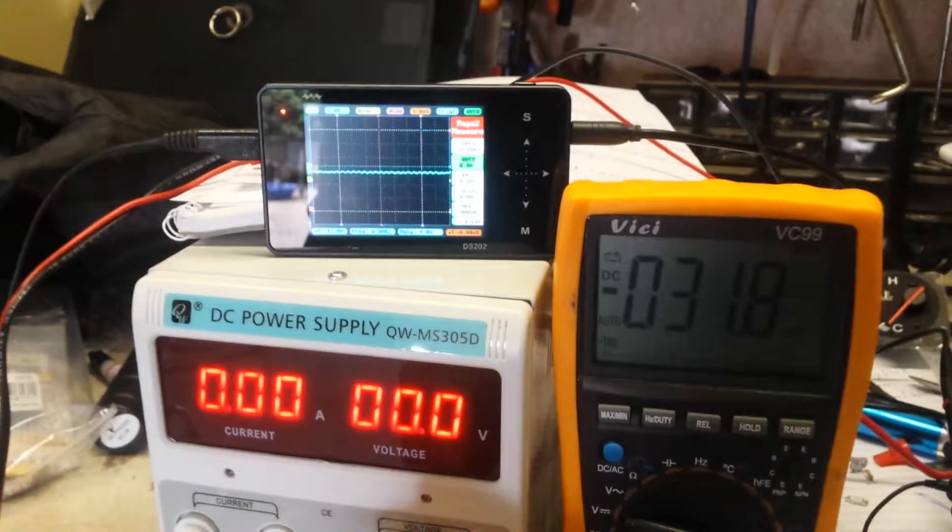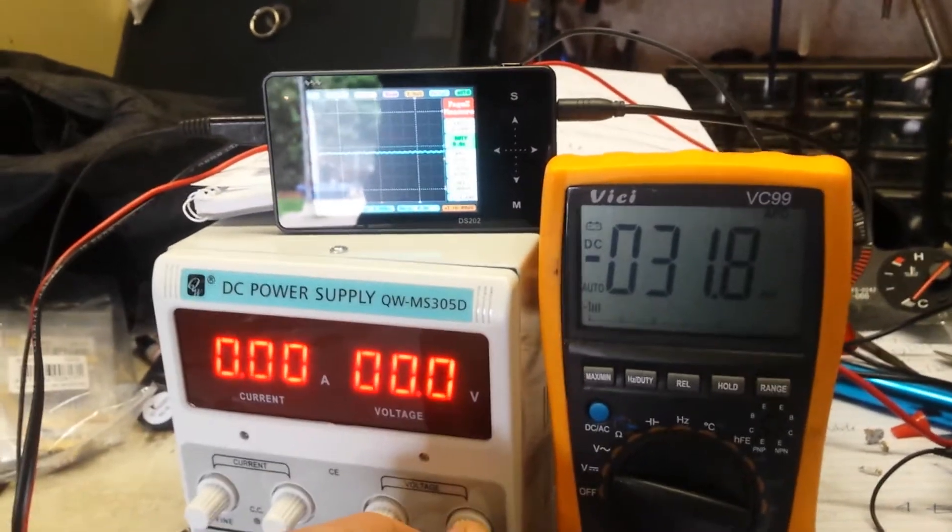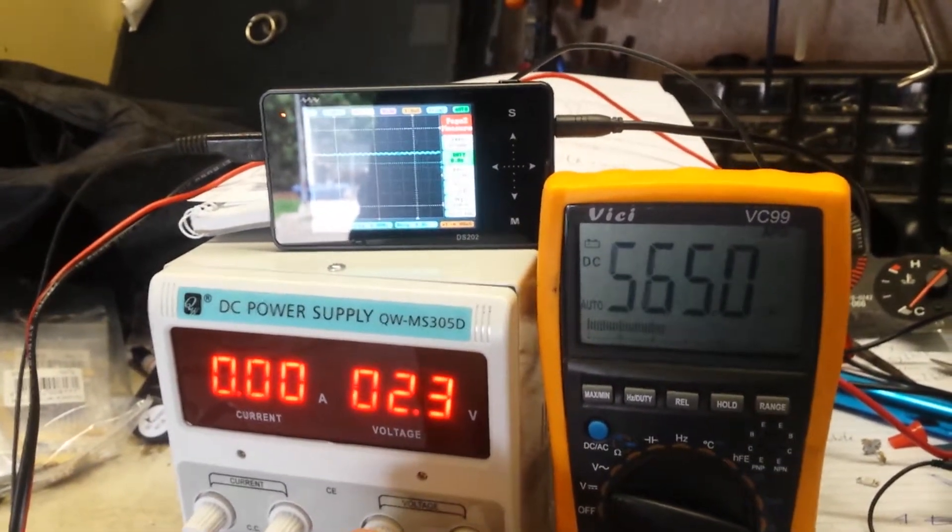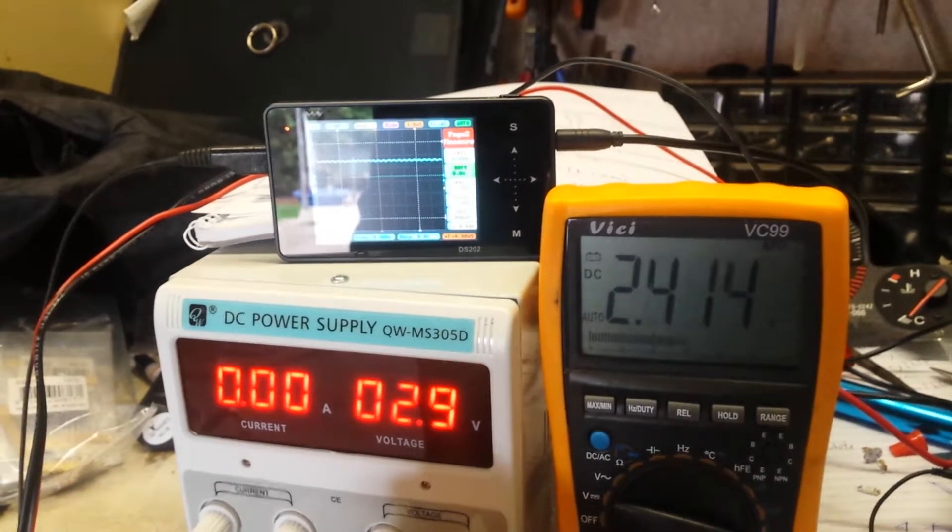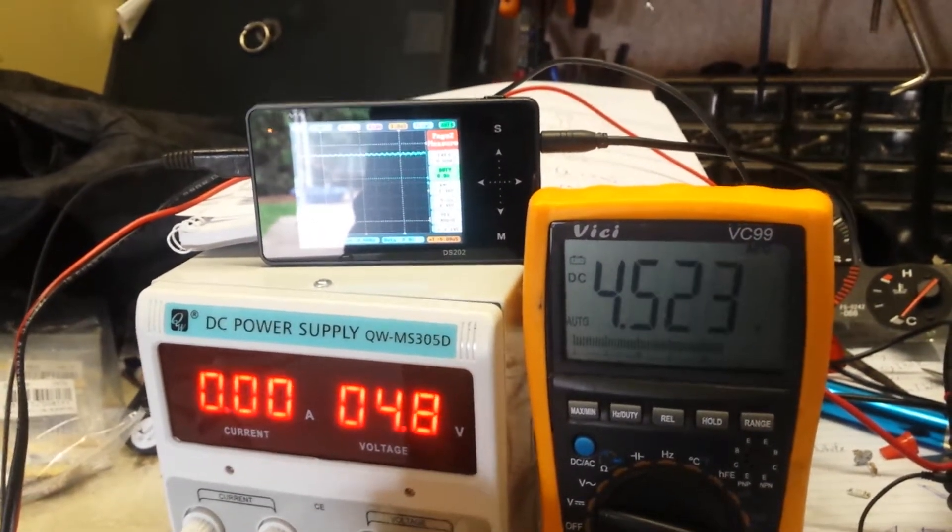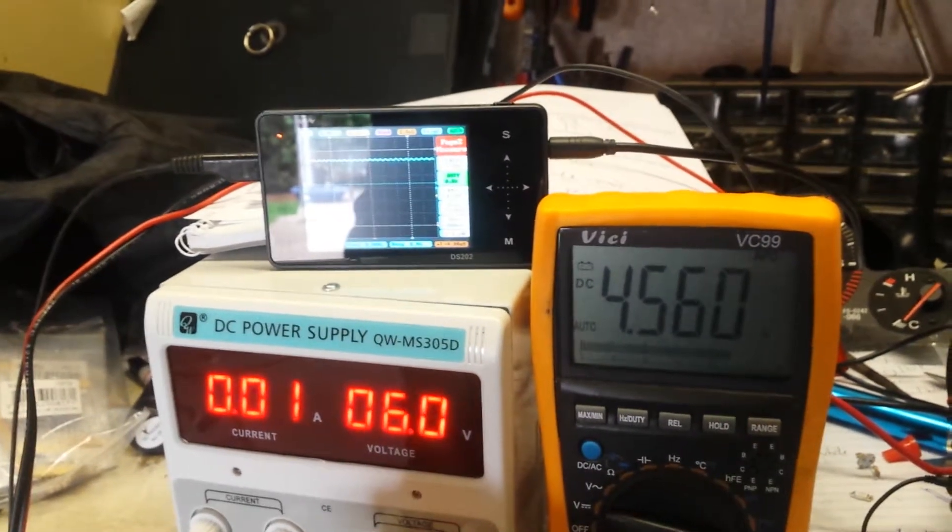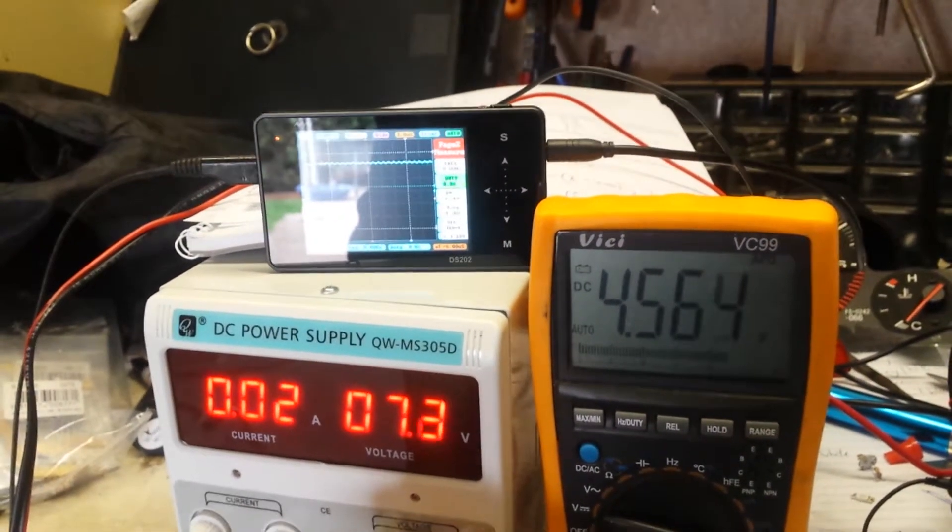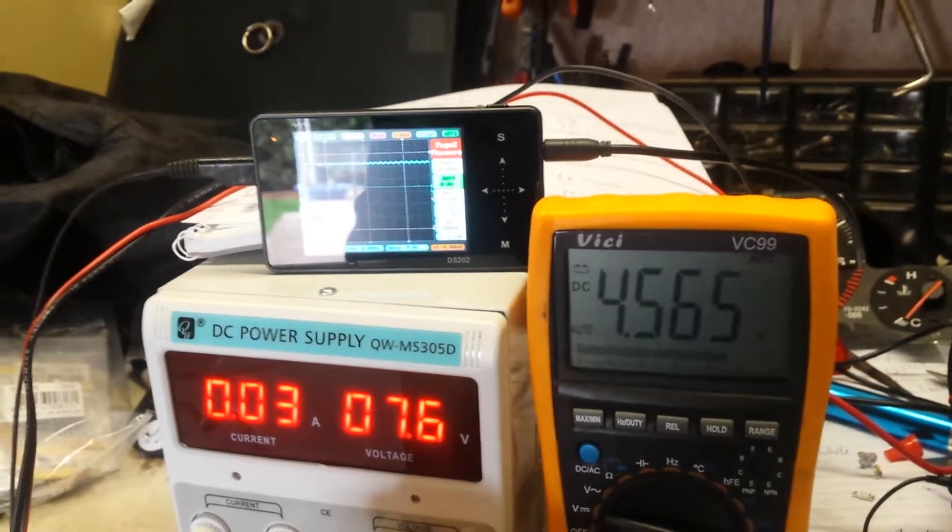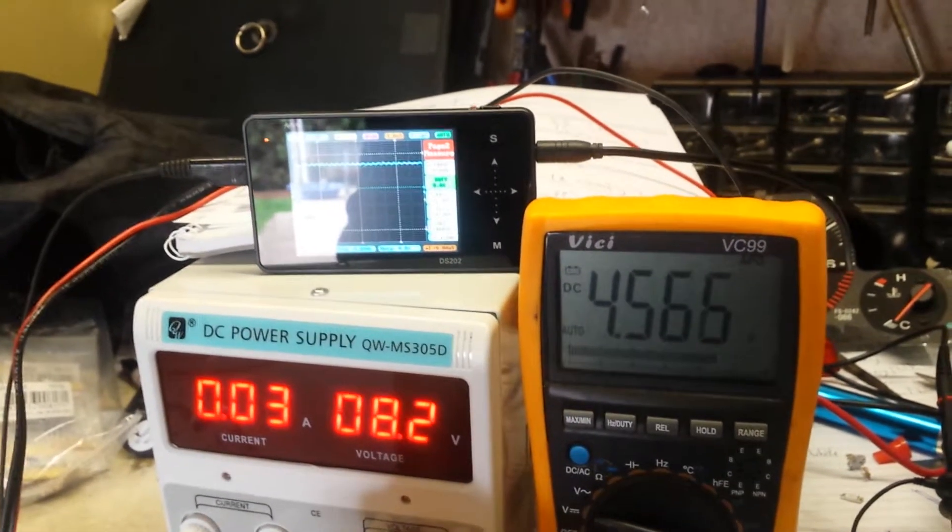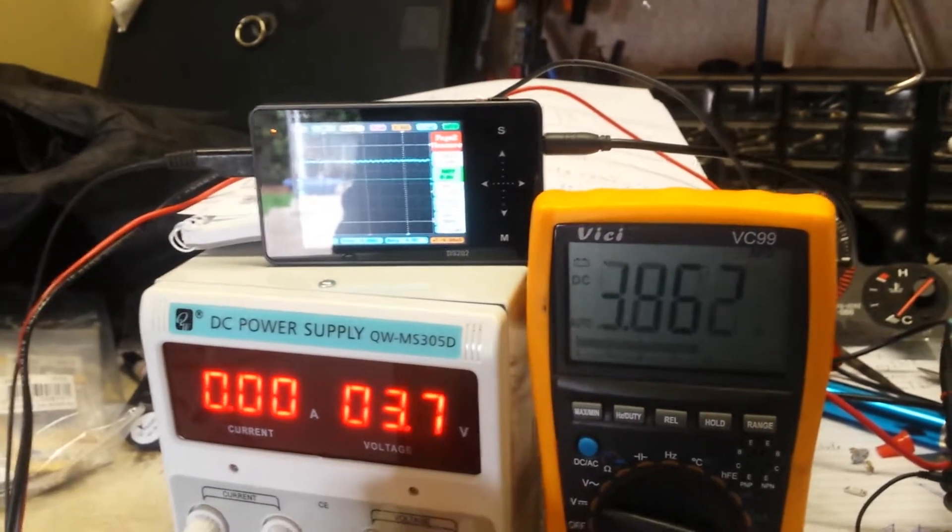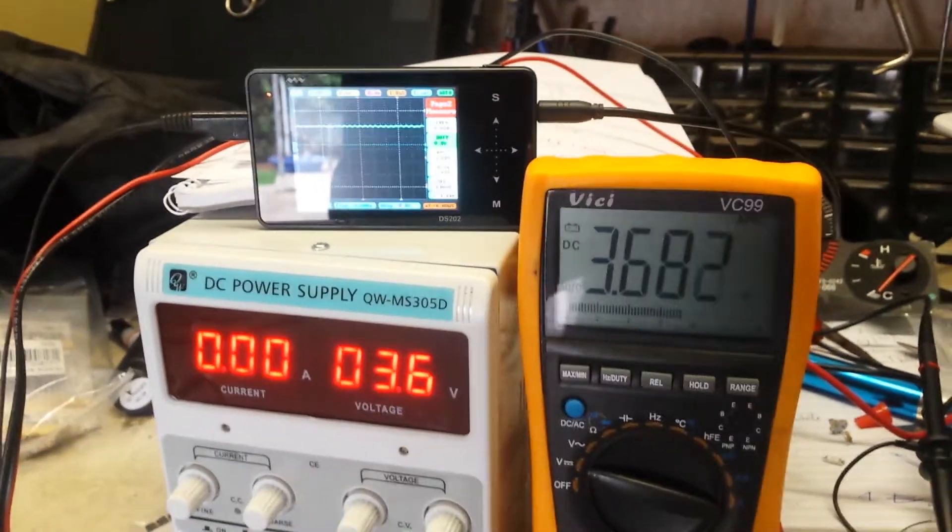I'm just going to wind this up and you'll see that at a certain point the voltage will match. So we're up to 6 volts and that voltage is steady at 4.56 volts. Wind it back down again and the input and output match.